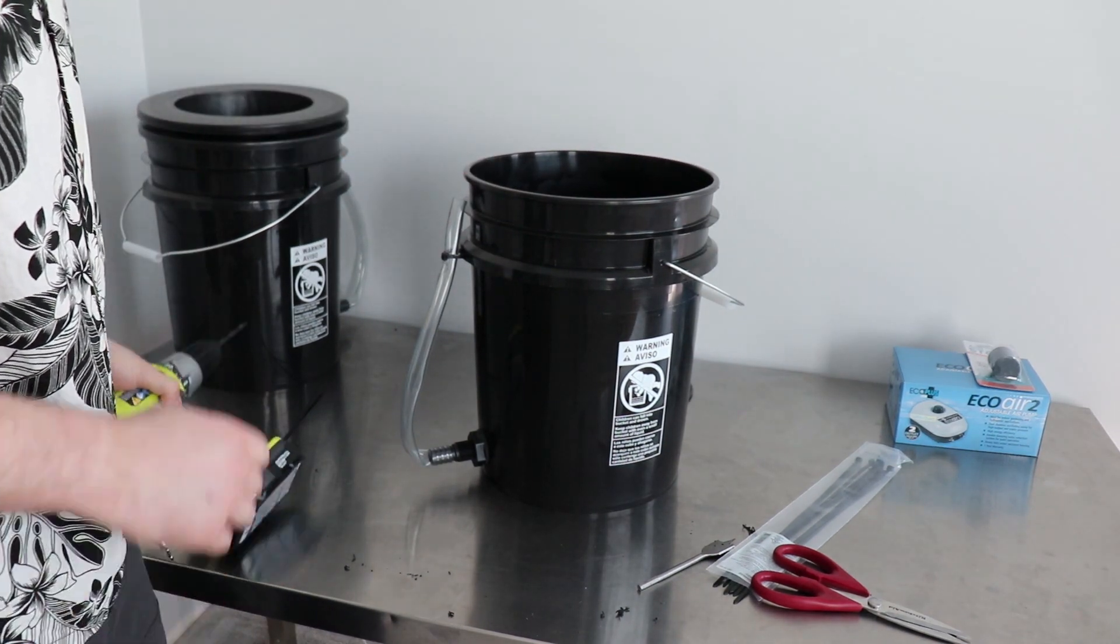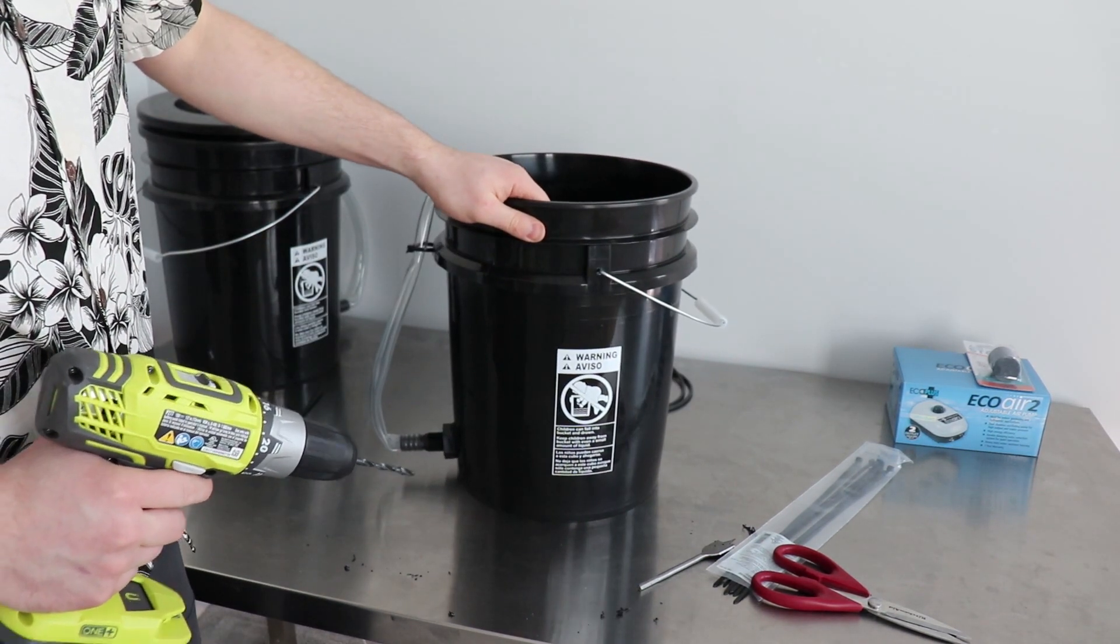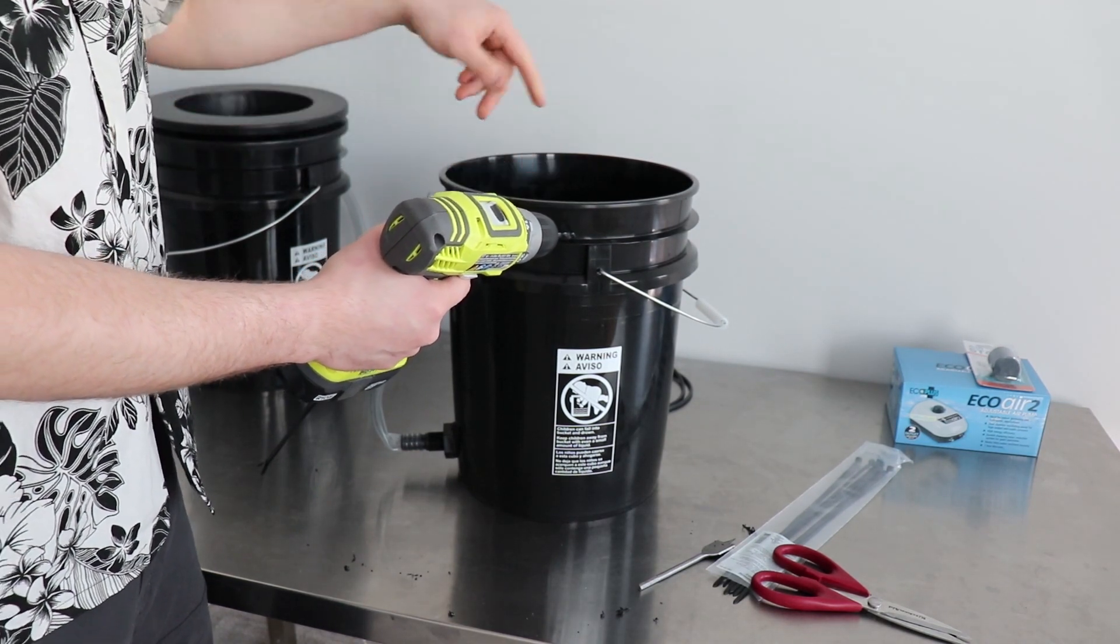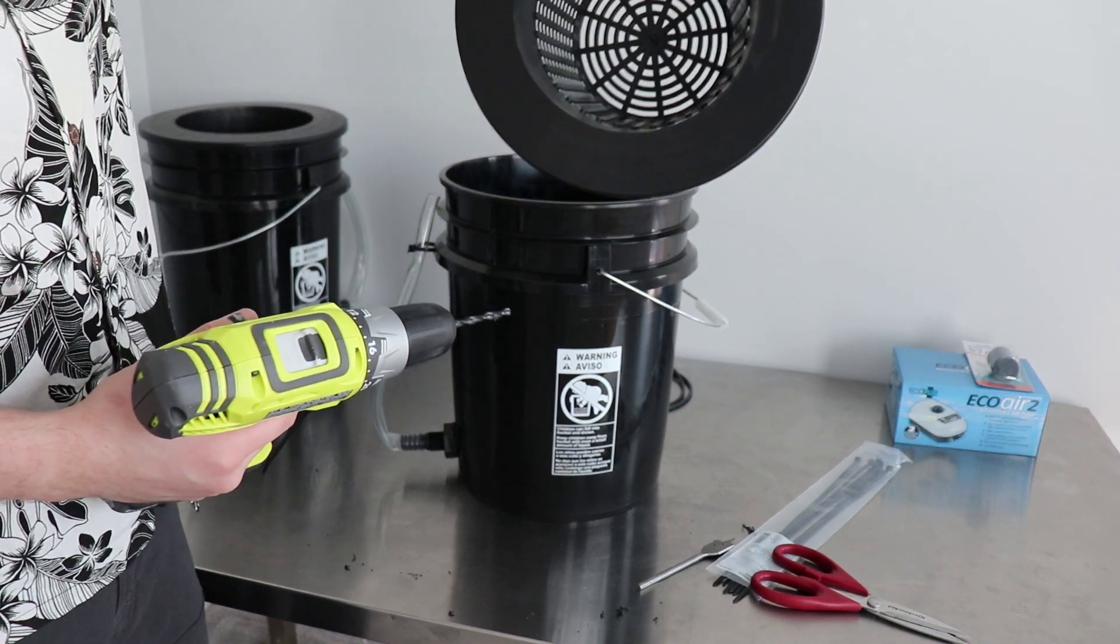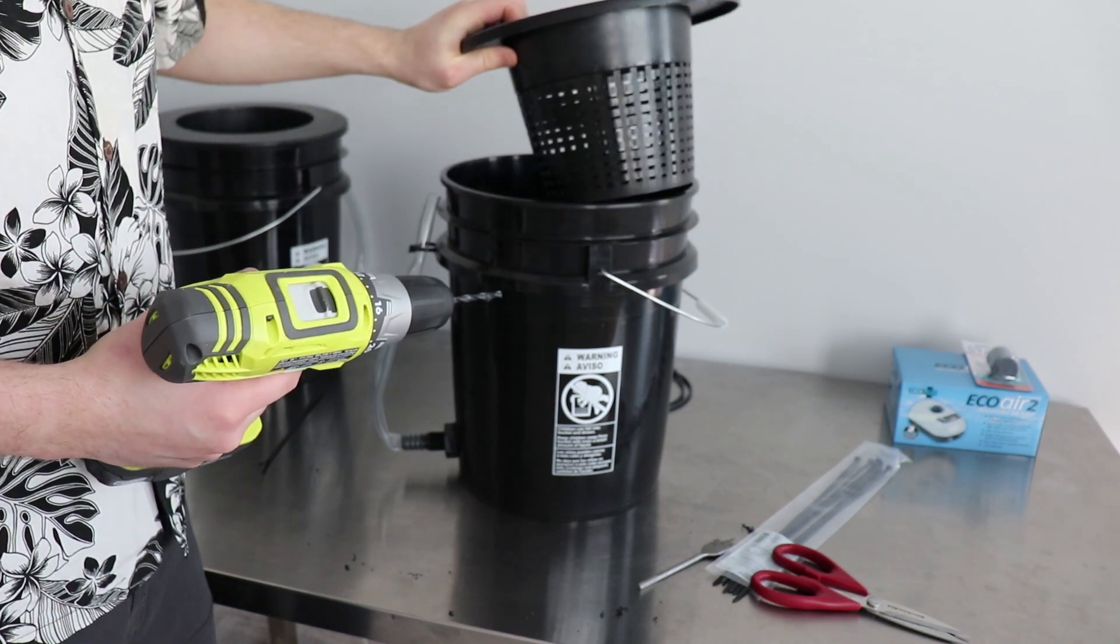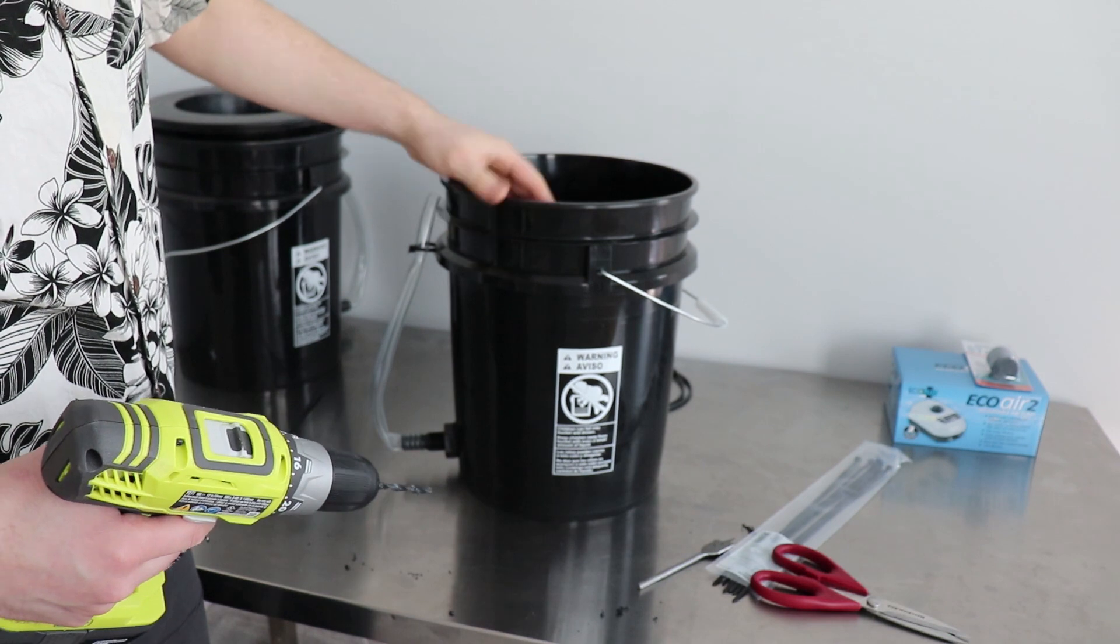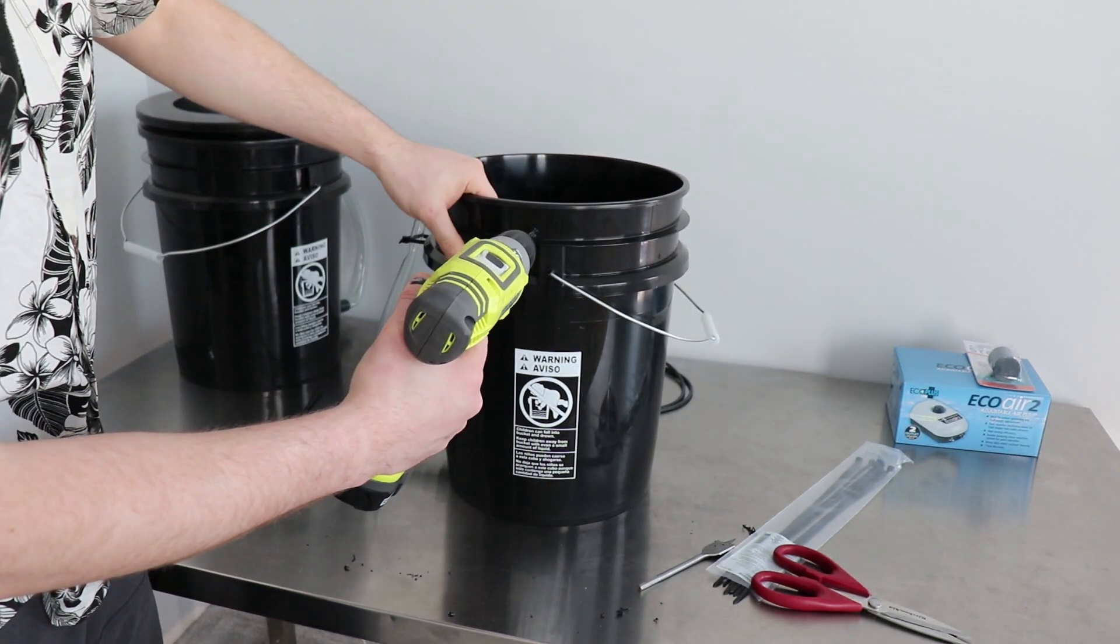Next, we're going to drill a hole for the air line. I like to put it right here from the side. You can put it through the top of the net cup, but it's just going to get in the way when you're lifting it up, lifting the plant up to swap out nutrients. Anywhere is good.